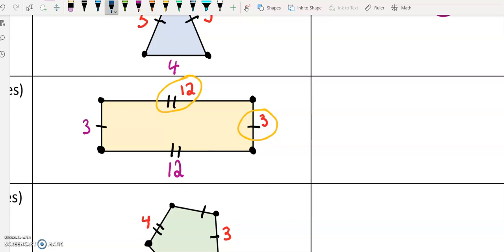So use those lines to help you identify the lengths of the sides that are not given. And then finding the perimeter, we would just add up all the sides. Make sure to be careful not to repeat any of the sides.